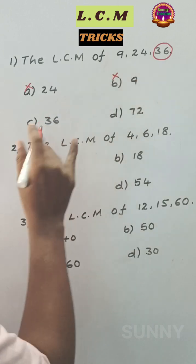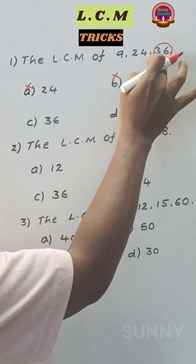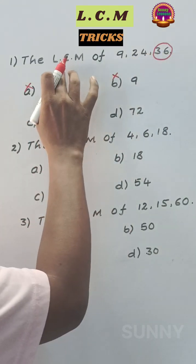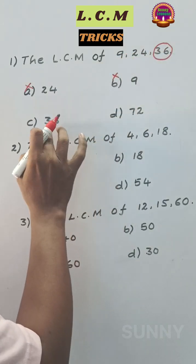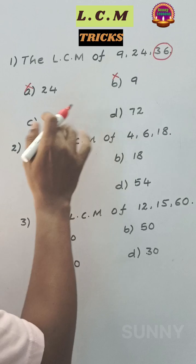9 is not a multiple of 36. 36 and 72 are the multiples of 36. So we ask the LCM, that's why the number is divisible by 9, 24, and 36. Here 36 is not divisible by 24.